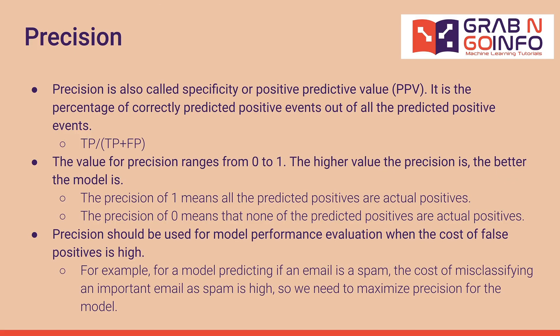Precision is also called specificity or positive predictive value. It is the percentage of correctly predicted positive events out of all the predicted positive events. Precision is calculated using the true positives divided by the total of true positives and false positives. The value for precision ranges from 0 to 1. The higher the precision, the better the model. A precision of 1 means all predicted positives are actual positives, and a precision of 0 means none are. Precision should be used when the cost of false positives is high.